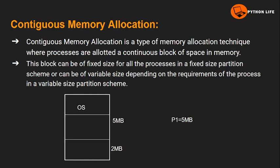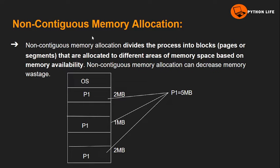Non-contiguous memory allocation is different from contiguous memory allocation. In contiguous memory allocation, the process is stored in a single block, but free space may exist elsewhere. Non-contiguous memory allocation divides the process into blocks.